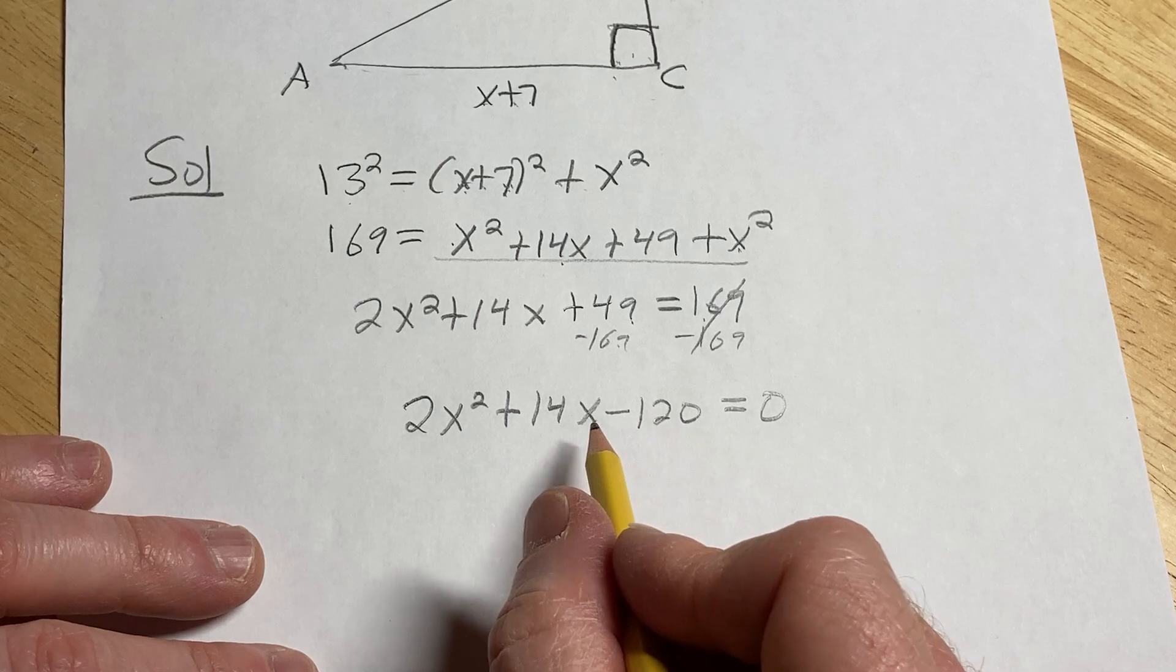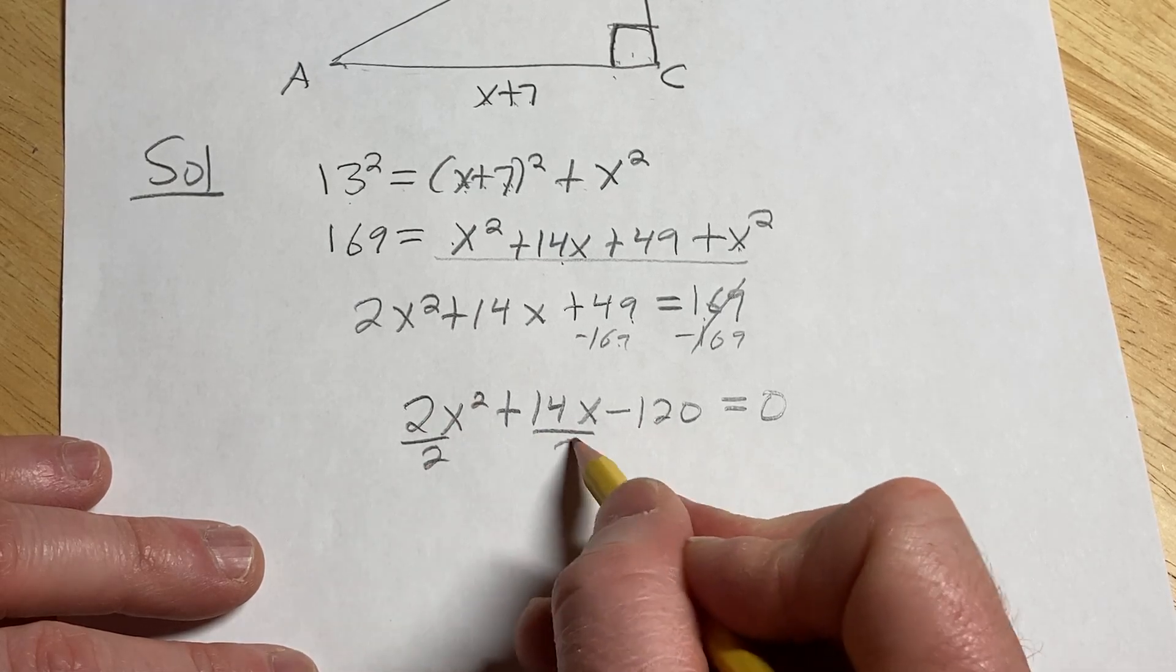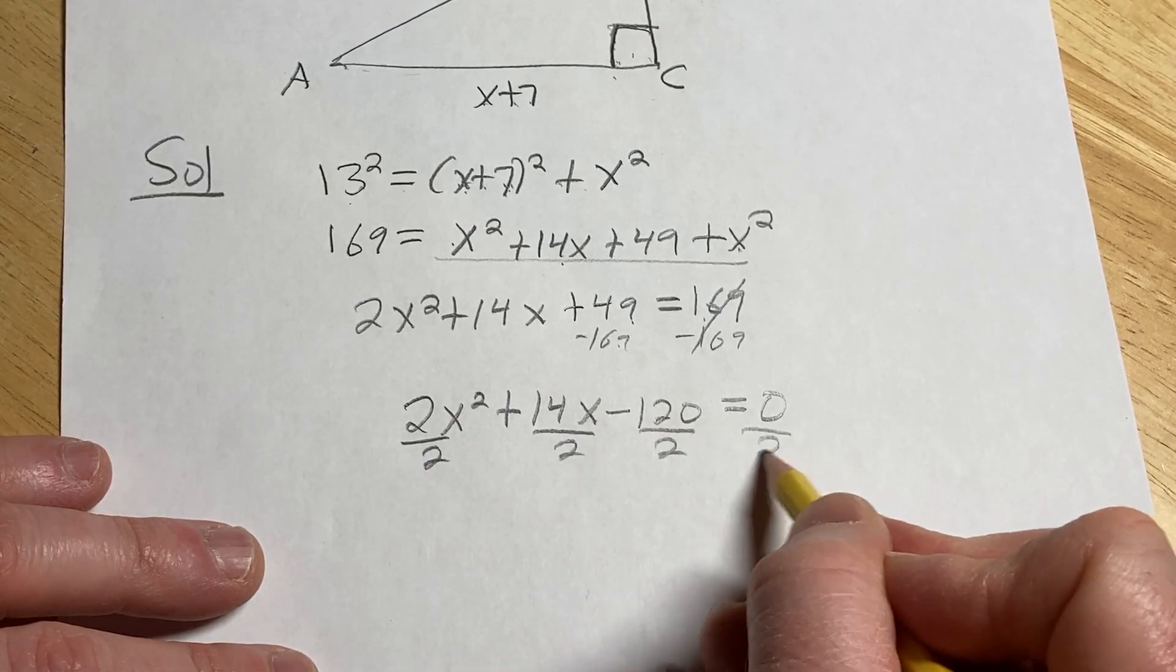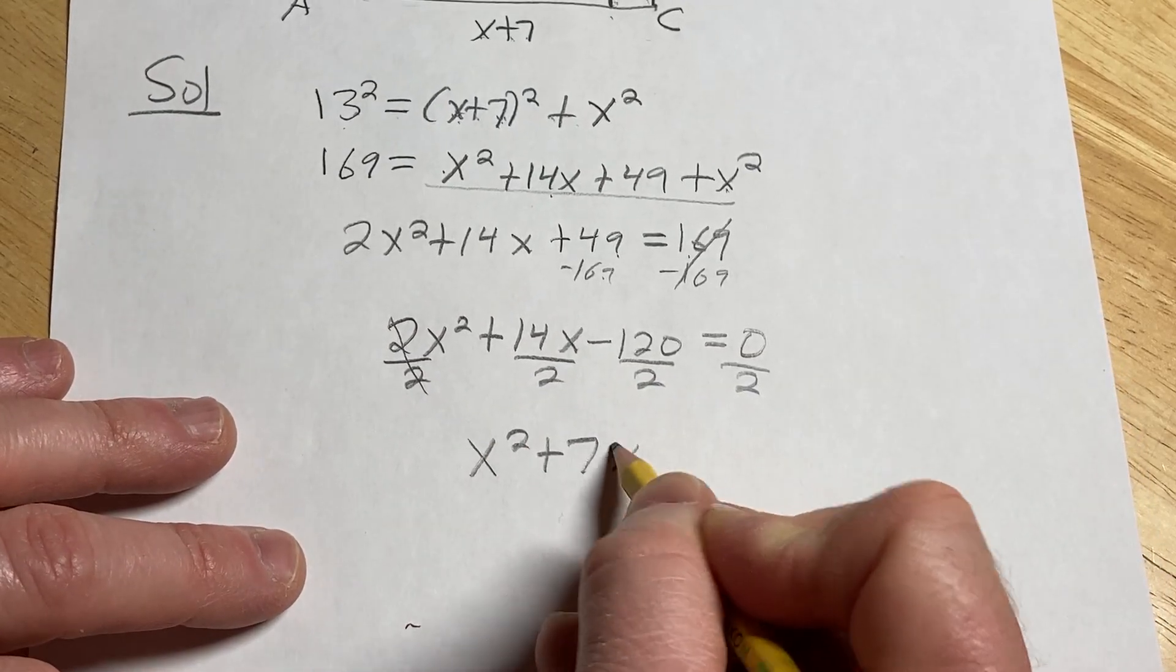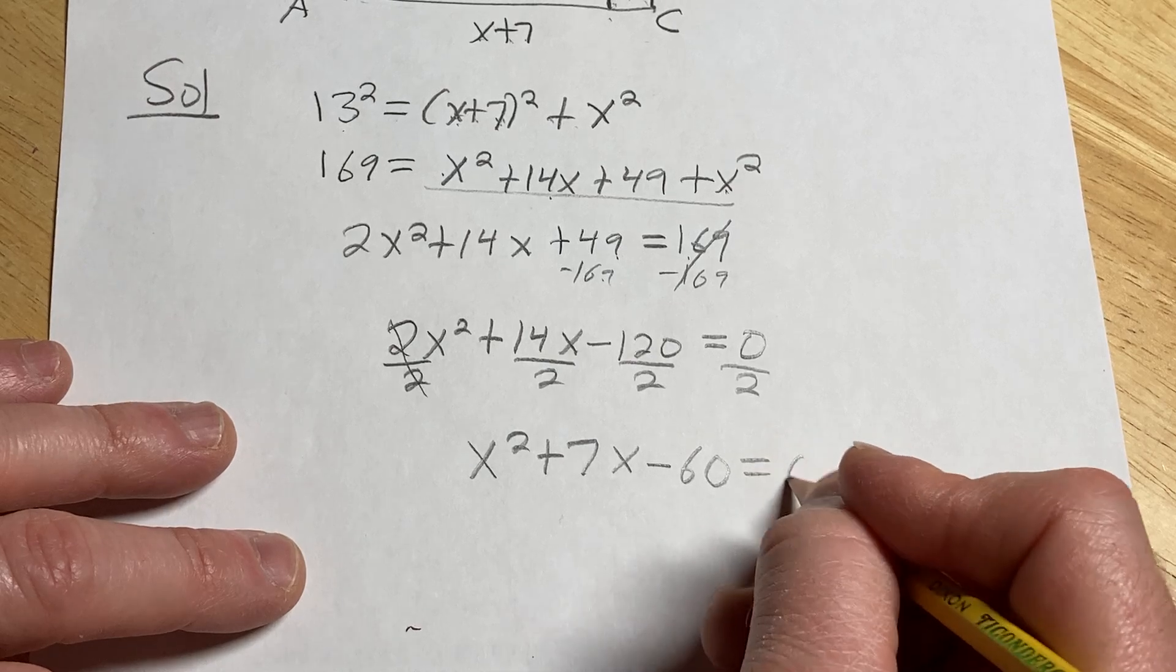Now we can clean this up a little bit because we can divide everything by two. That will make it a little bit easier to factor. So we have x squared plus 7x minus 60, and that's equal to zero.